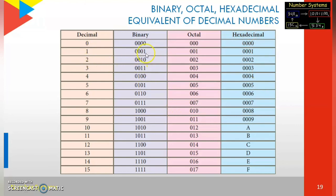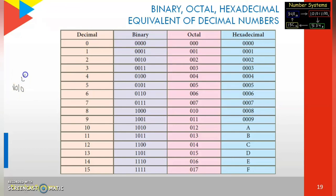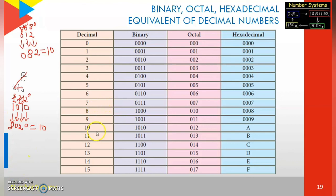And for decimal 1, we represent it as 001 in octal and 001 in hexadecimal. Looking at decimal 10: it is represented in binary as 1010. Let's verify: the positional values are 2 power 0, 2 power 1, 2 power 2, 2 power 3. For binary 1010: anything power 0 equals 1, so 0×1 = 0; 2 power 1 = 2, so 1×2 = 2; 2 power 2 = 4, so 0×4 = 0; 2 power 3 = 8, so 1×8 = 8. Adding: 8+2 = 10 base 10.